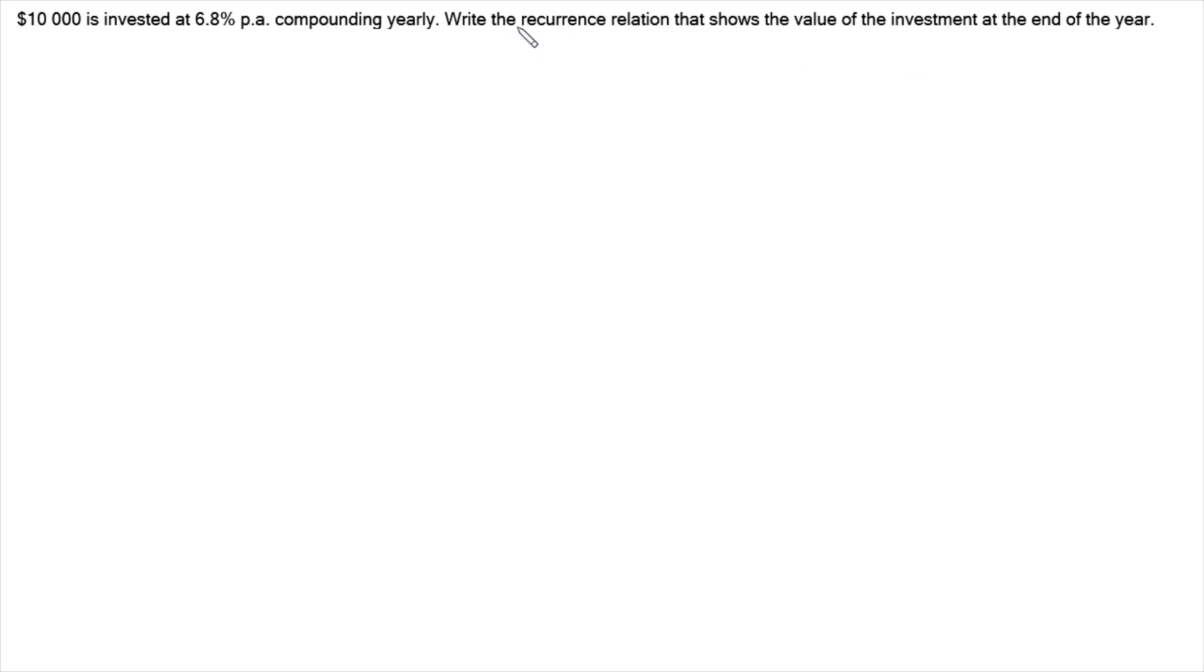So a recurrence relation is a formula that represents the compounding interest on a term-by-term basis, on a year-by-year basis in this case. So it'll work out for each year how much is going to be in the account.